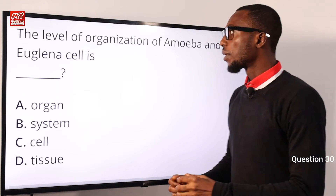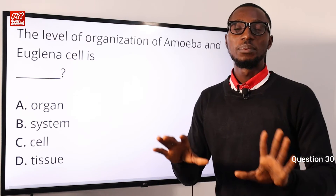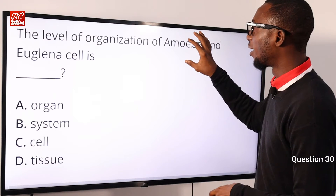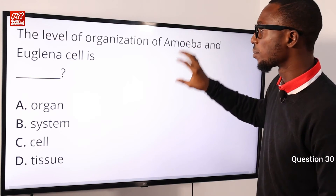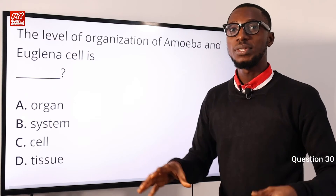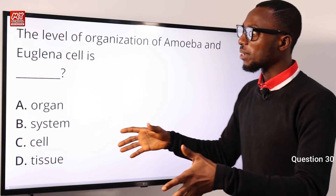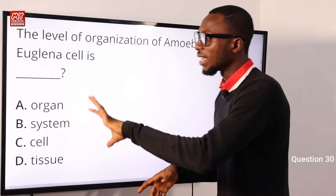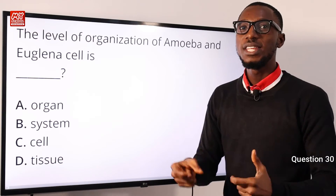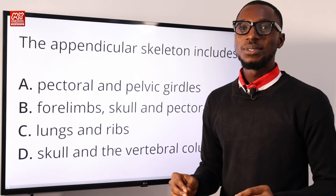Question 30: The level of organization of amoeba and euglena is what? They belong to kingdom Protista. When you mention Protista, they are unicellular or single-celled organisms. They belong to the phylum Protozoa. Amoeba is an animal-like protist, while euglena exhibits both plant-like and animal-like characteristics. The level of organization is the cell level — because they belong to kingdom Protista and are unicellular organisms. The correct option is C for cell.